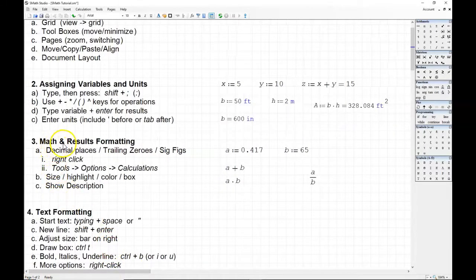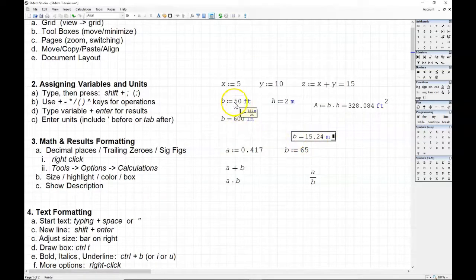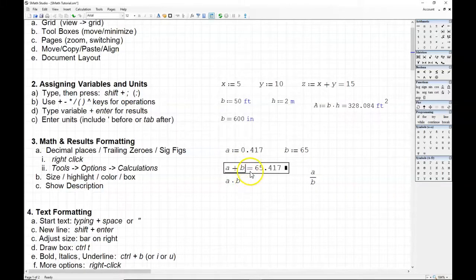Alright. Let's look at math and results formatting. Here we've got a couple different variables, A and B. And notice that I can reassign B. Even though I assigned it to be 50 feet here, I can reassign it to be 65 here. And what I'll do is I'll just type down here and type B equals. Notice it says 65. But if I drag this box above the second B, it's now back to my assigned value of 50 feet, except it converts it to meters. For these equations, B is equal to 65. And so what I'm going to do is I'm going to select on this first one, A plus B. And I'm just going to press the equal sign. And we can see that we have 65.417.